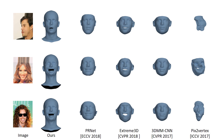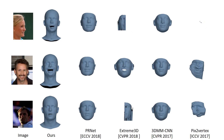While 3DMMCNN also shows robustness to varying conditions, it only reconstructs the facial shape and not the facial expression. Other methods, like Extreme3D or PIX2Vertex, reconstruct unrealistic faces for extreme head poses, extreme lighting conditions or low image resolution. Compared to these methods, RingNet qualitatively reconstructs facial shape and expression better and is more robust to extreme head poses, partial occlusions and different lighting conditions.